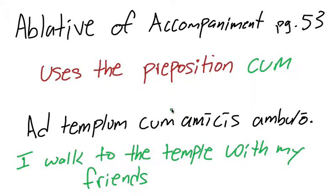And so cum, remember, it takes the ablative. Amicis is ablative, it's ablative plural. So when you walk to the temple with your friends, you are accompanying them, you're going with them. That's basically what an ablative of accompaniment is and what it does.